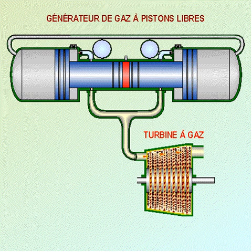Most free piston engines are of the opposed piston type with a single central combustion chamber. A variation is the opposing piston engine, which has two separate combustion chambers. An example is the Stelzer engine.